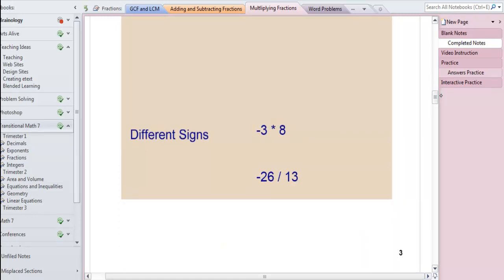Different signs gives us what sign for our answer with multiplication and division? Negative, right? So what's negative 3 times 8? Negative 24. And what's negative 26 divided by 13? Negative 2.